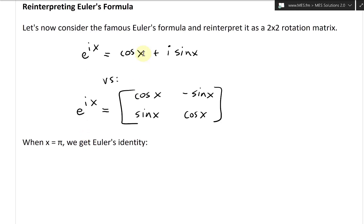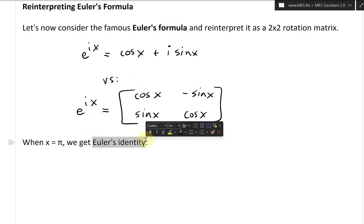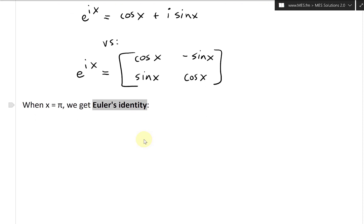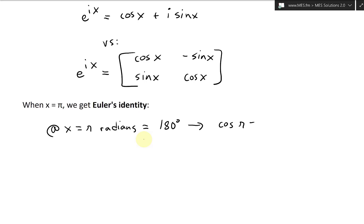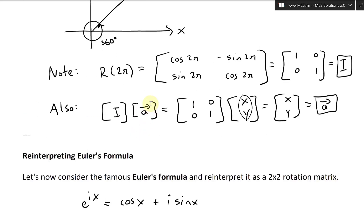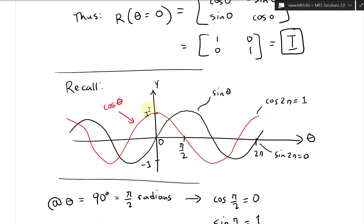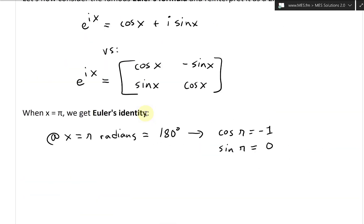Now let's take a look at Euler's identity. When x equals pi, we get Euler's identity. At x equals pi — which is radians, same as 180 degrees — cosine pi equals negative one, and sine of pi equals zero. We can see this from the unit circle: sine pi equals zero, and cosine pi equals negative one. So we have those values, and now we can throw them into our rotation matrix.